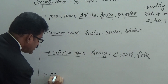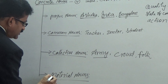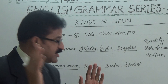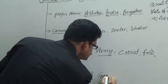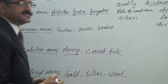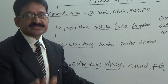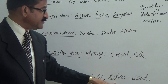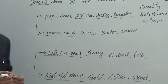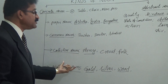The last one is material nouns. The names of metals, materials, out of which things are made, are called material nouns. For example: gold — a precious metal out of which gold ornaments can be made; silver — a metal out of which we can prepare utensils, ornaments; wood — out of which we can prepare furniture. The names of metals, materials, and substances out of which things are made are called material nouns.